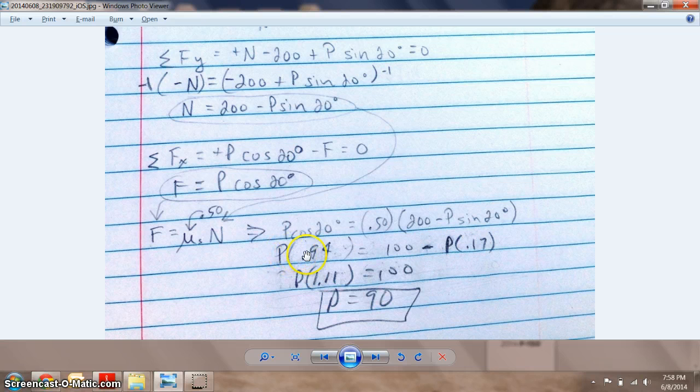If I added 0.17P to this side of the equation, I could get rid of this P times 0.17 here. If I add it over here, I have to add it over here too. So if I add 0.17 to 0.94, I get 1.11.